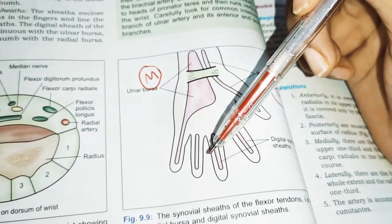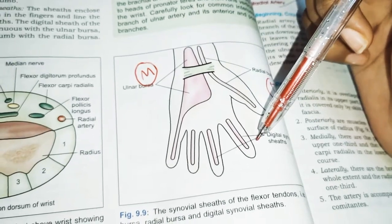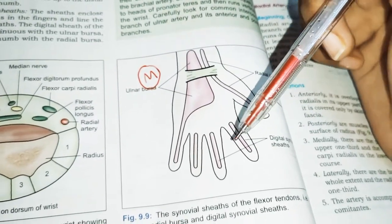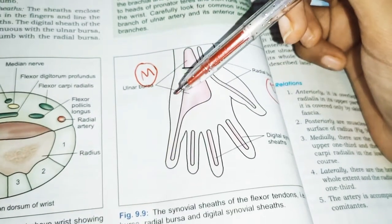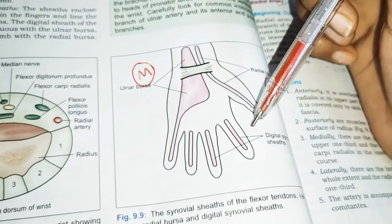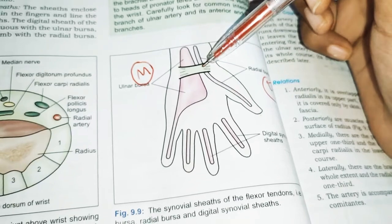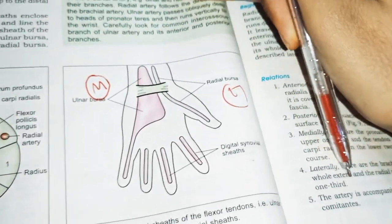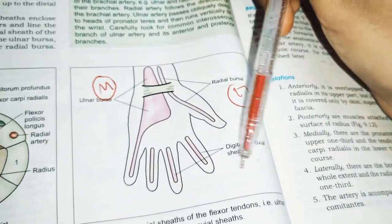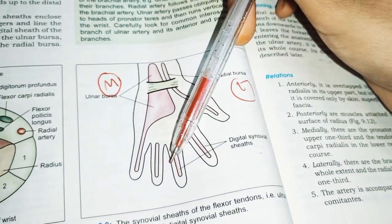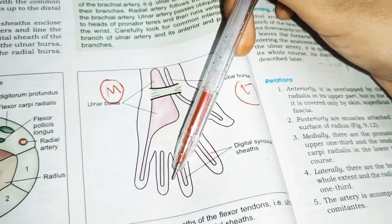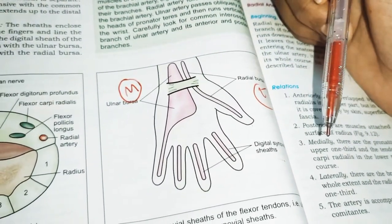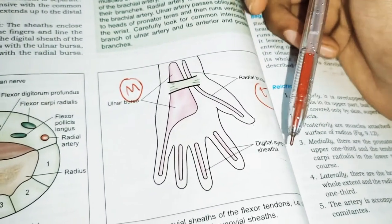Coming to the digital synovial sheaths — these enclose the flexor tendons in the fingers and line the fibrous flexor sheaths. The digital sheath of the little finger is continuous with the ulnar bursa, and that of the thumb is continuous with the radial bursa. However, the digital sheaths of the middle three fingers — index, middle, and ring — are independent.